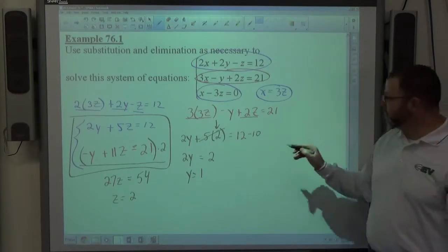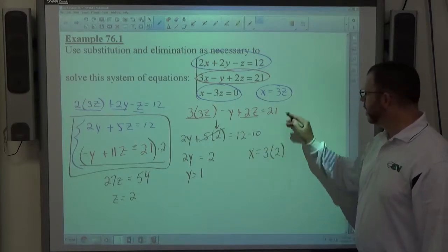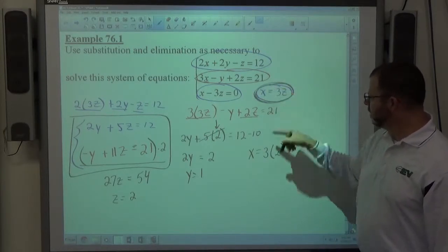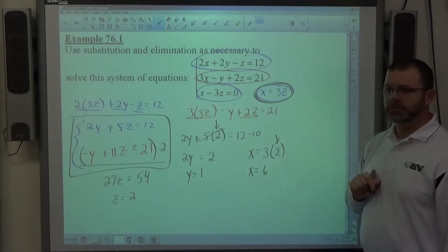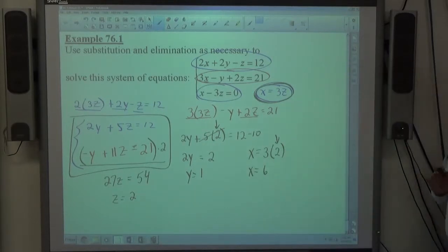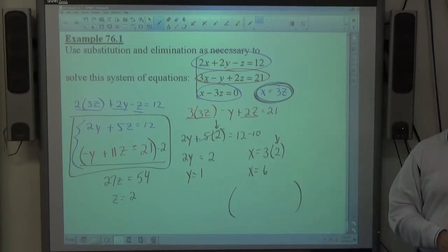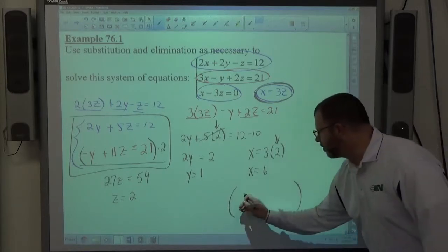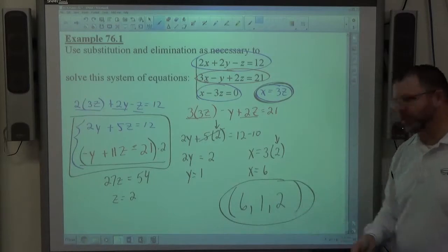X equals 3Z. And, just using this fact here, again, Z still equals 2, so X is equal to 6. And, what I get is X, Y, and Z. And, the order I want to write them in is X, Y, Z order as an ordered triple. X first, Y second, Z last. And, there's my answer, 6, 1, 2.